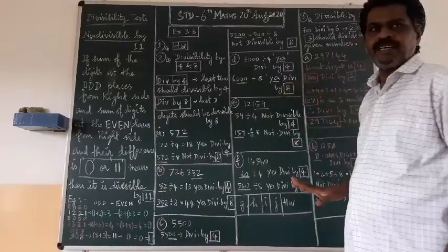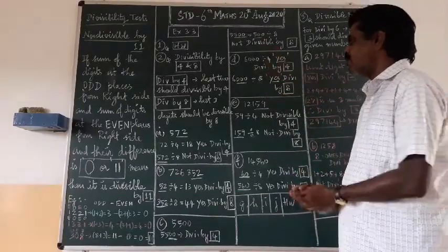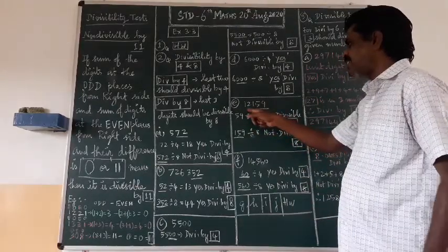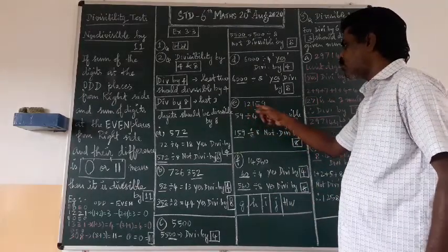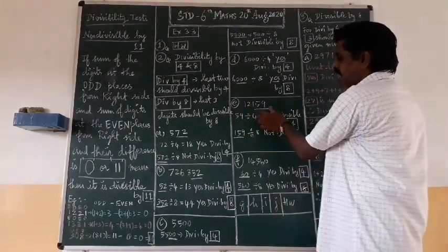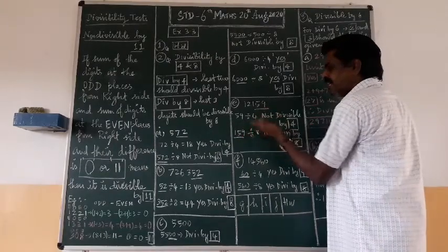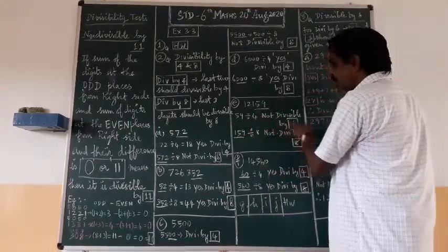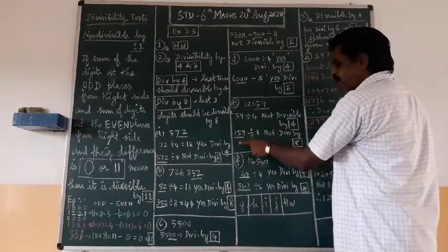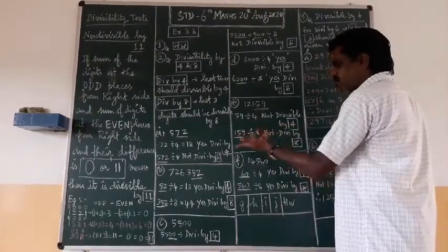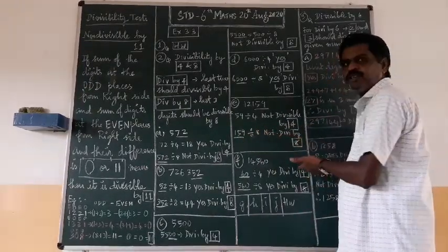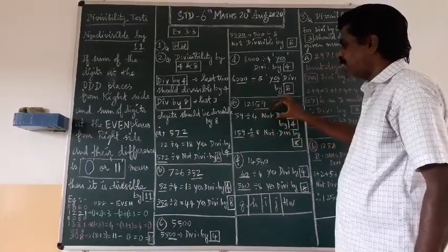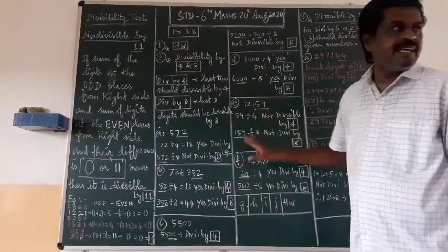Next, the five-digit number 12159. Check for four: last two digits are 59. Can 59 be divided by four? No. So this number is not divisible by four, and also not divisible by eight.